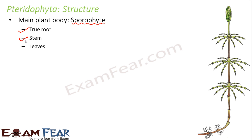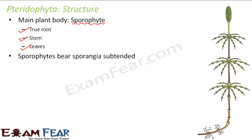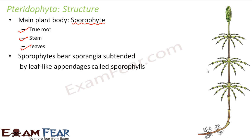The plant body has true root, stem and leaves. Here you can see the leaves, the stem and the roots. The sporophyte bears sporangia subtended by leaf-like appendages called sporophylls. The leaf-like structures surround the sporangia, and the sporangia contain the spores. Inside the sporangia we have spores, and these spores germinate to form a new plant — that is why Pteridophytes mostly reproduce by spore formation.